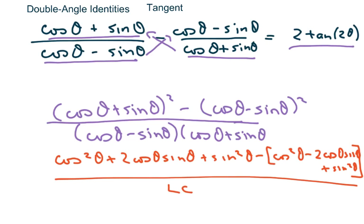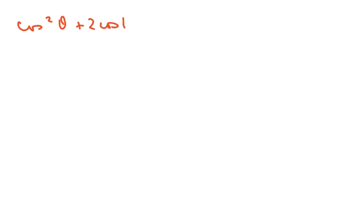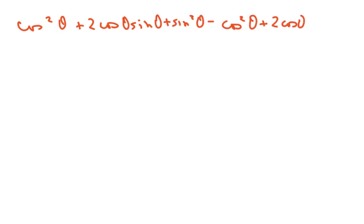Minus two cosine theta sine of theta plus sine squared of theta, all over my common denominator. Now let's clean this up. The numerator is cosine squared of theta plus two cosine theta sine theta plus sine squared of theta. Then distributing the negative, you get negative cosine squared of theta plus two cosine theta sine theta minus sine squared of theta.